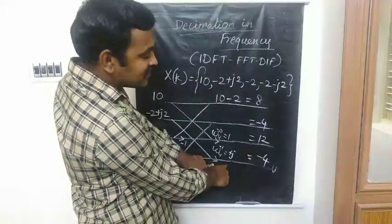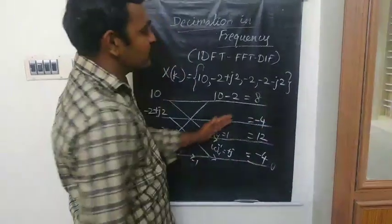Once again I am repeating: -2+j2 is coming here and here you are having +2 as well as +j2. +2 and -2 cancel each other. +j2 as well as +j2 at this point you are having +4j. +4j if you multiply it with this j you are having -4. At this stage you are getting the outputs: 8, -4, 12, and -4. Now we have to move towards the 2-point DFT.